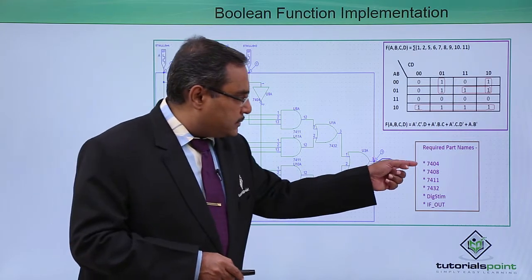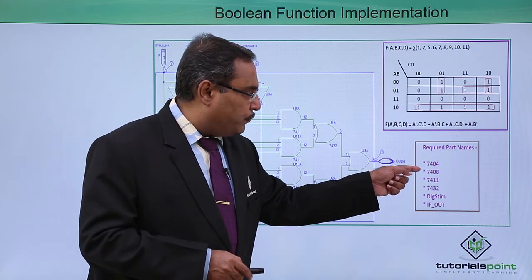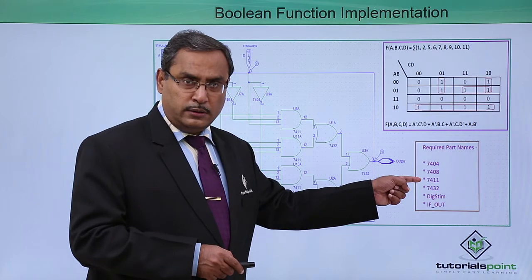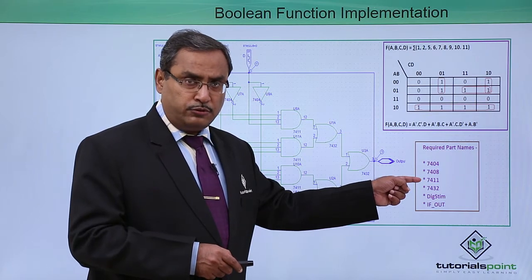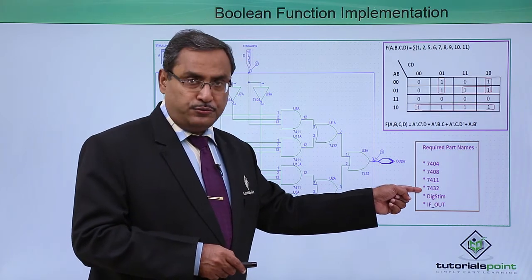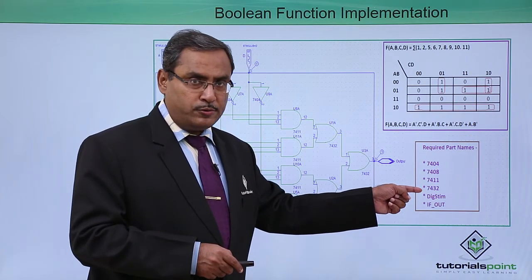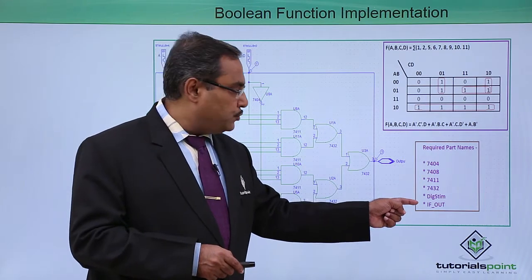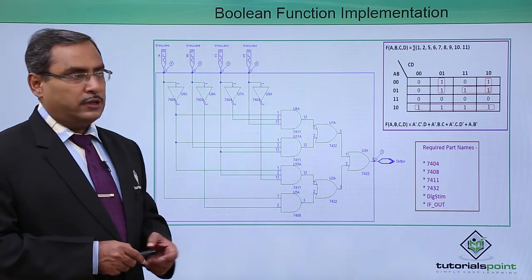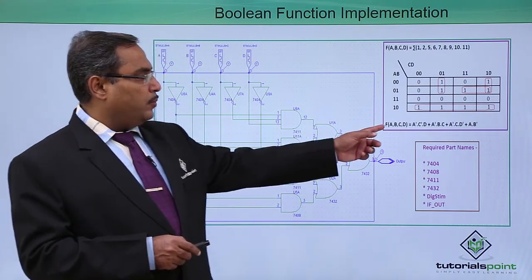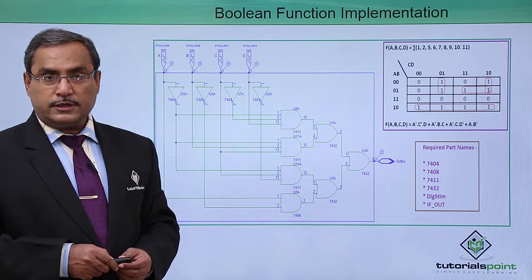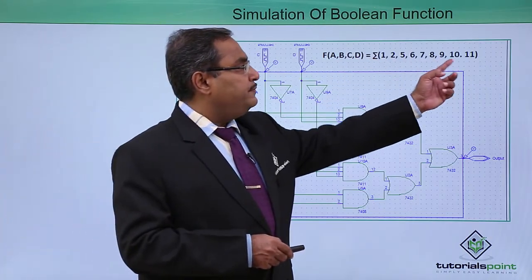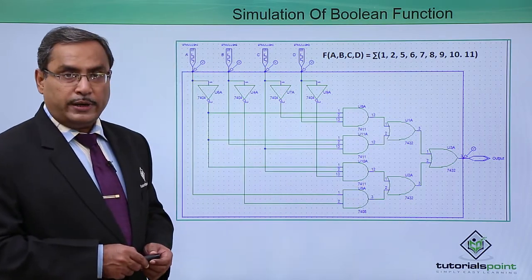These are the parts: IC 7404 (NOT gate), IC 7408 (2-input AND gate), IC 7411 (triple 3-input AND gate), IC 7432 (2-input quadruple OR gate), DIGSTREAM for the input, and IF OUT for the output. The Karnaugh map is shown for better understanding. We are going to implement this very Boolean function.